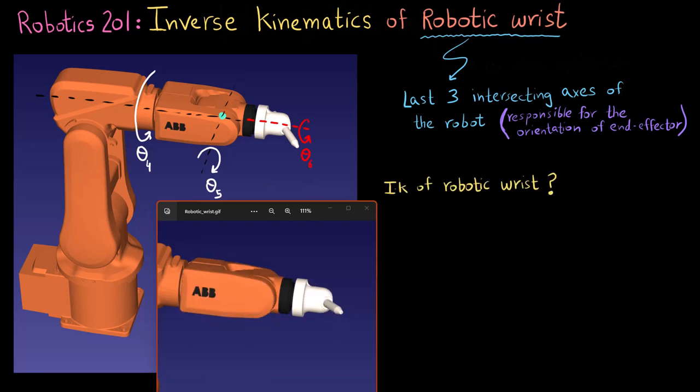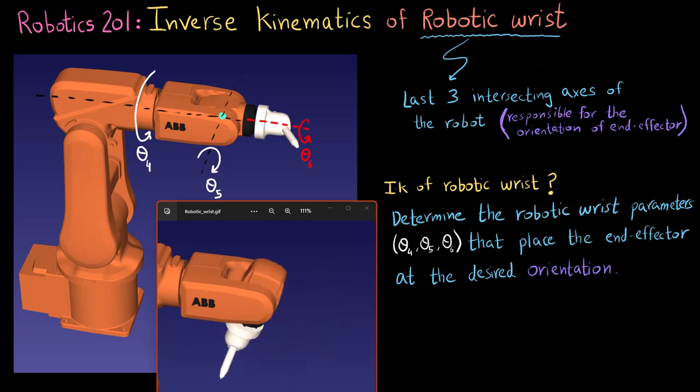And now what is the inverse kinematics of robotic wrist? It is basically to determine the wrist parameters which in this case are my theta 4, theta 5 and theta 6 that place the end effector at the desired orientation. Again notice the word orientation because we are talking about the robotic wrist which is the last three axes and these are only responsible for the orientation. And for this robot the first three axes of rotation would be responsible for the position and the last three are going to be responsible for the orientation.